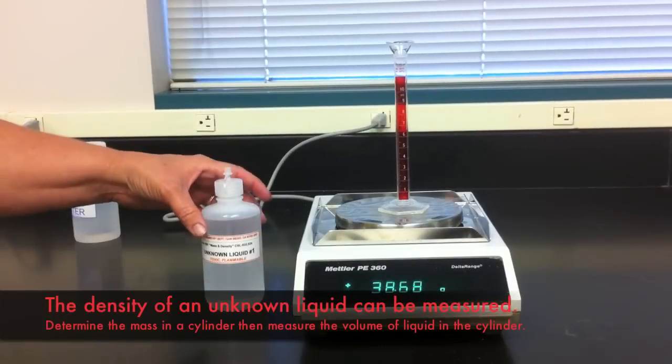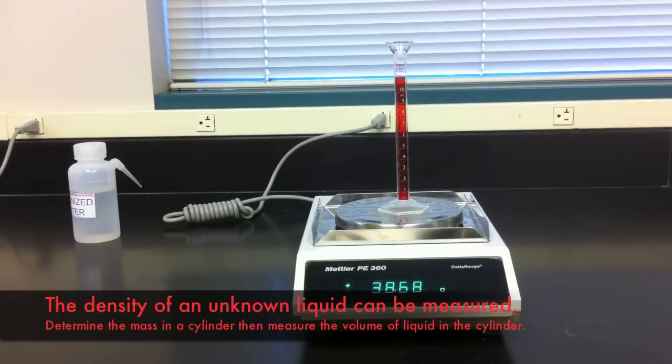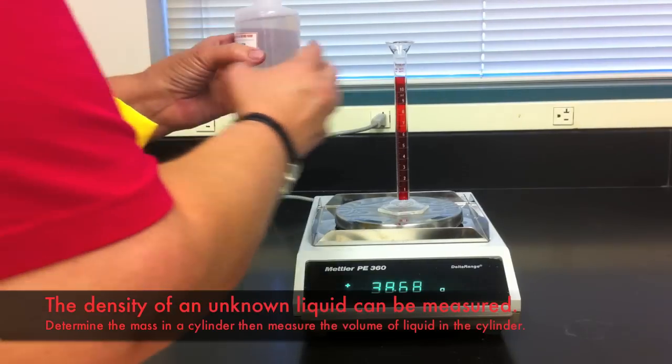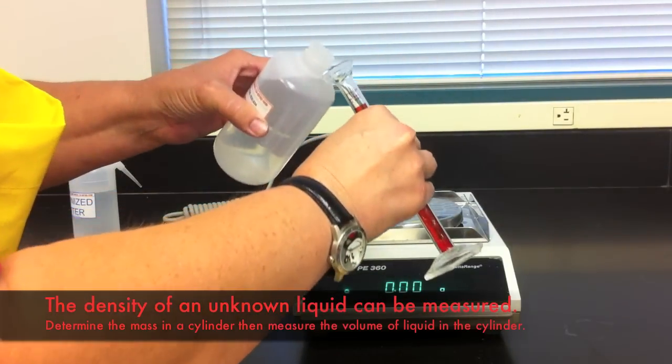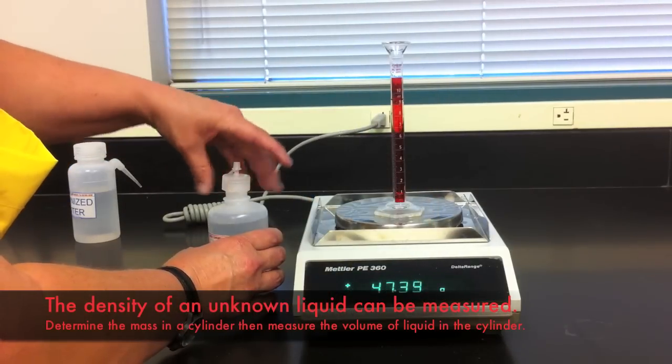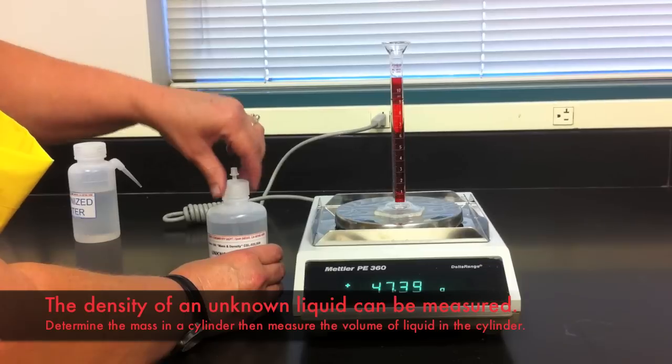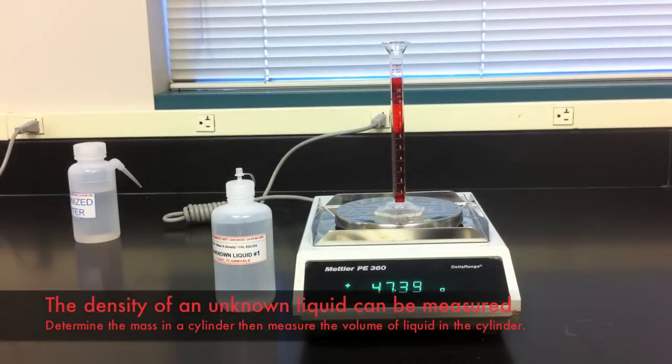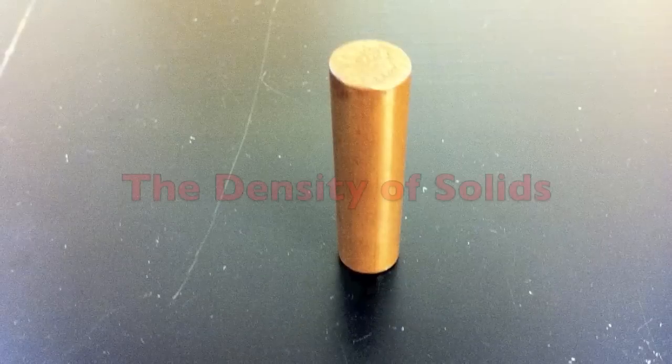To determine the density of an unknown liquid you will first need to record the mass of a dry empty graduated cylinder. Add a volume of the unknown liquid to it and record the volume added. Then finally record the mass of the graduated cylinder with the unknown liquid in it to determine how much mass has been added.